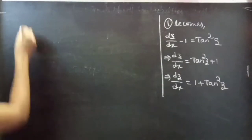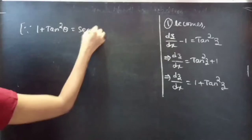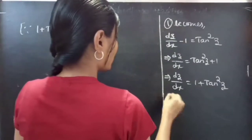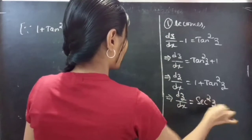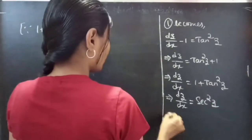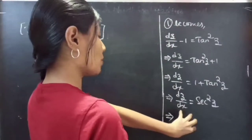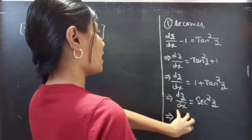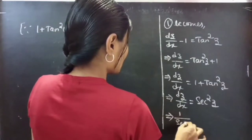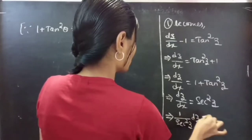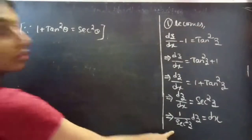Since we know that 1 plus tan square theta equals to secant square theta, this becomes dz by dx equals to secant square z. Now, you can write this in variable separable form by taking all functions of z and differential dz to the LHS and taking differential dx to the RHS. You will get 1 by secant square z into dz equals to dx. So, here the variables are separable.